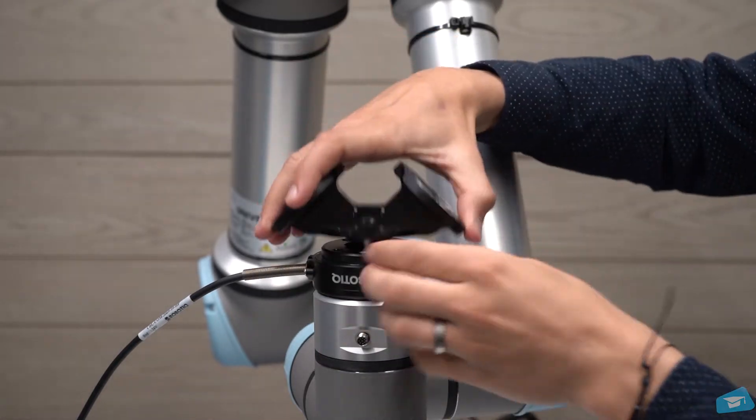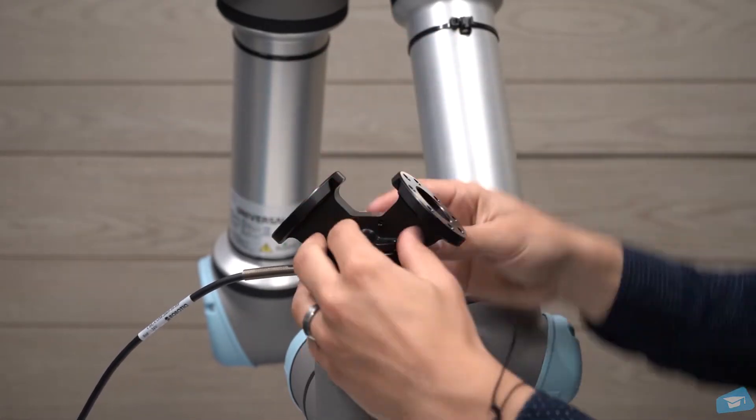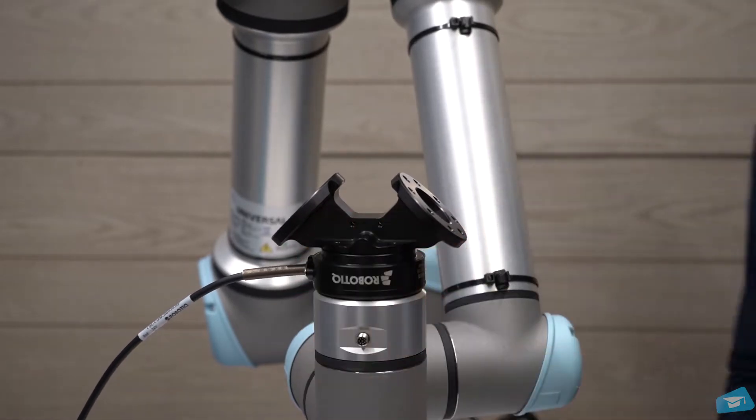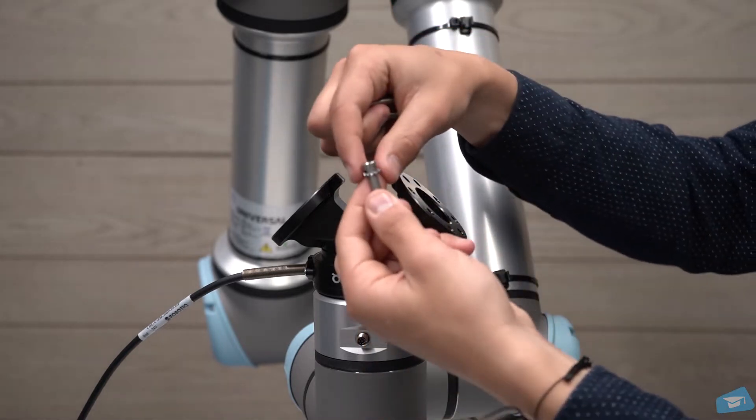If you have already installed the camera, place the bracket on top of the tool plate. Otherwise, place it directly on the robot wrist. Do not forget to place a dowel pin to align the bracket.